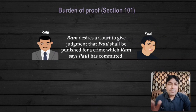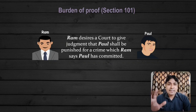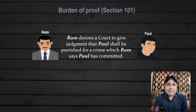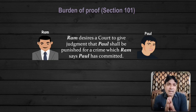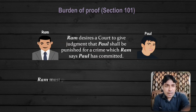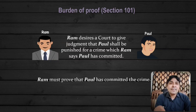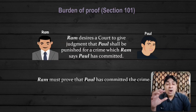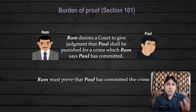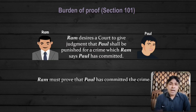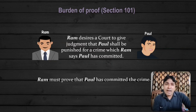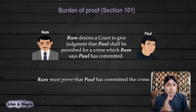There is an example: Ram desires a court to give judgment that Paul shall be punished for a crime which Ram says Paul has committed. Ram is having a desire that Paul should be punished for a particular offense. Now Ram must prove that Paul has committed the crime. Under such circumstances, the burden of proof lies on Ram. Ram has to prove that Paul has committed an offense. Toh yahan par burden of proof Ram pe rahega — Ram ko prove karna padega ke Paul ne crime kiya hai.